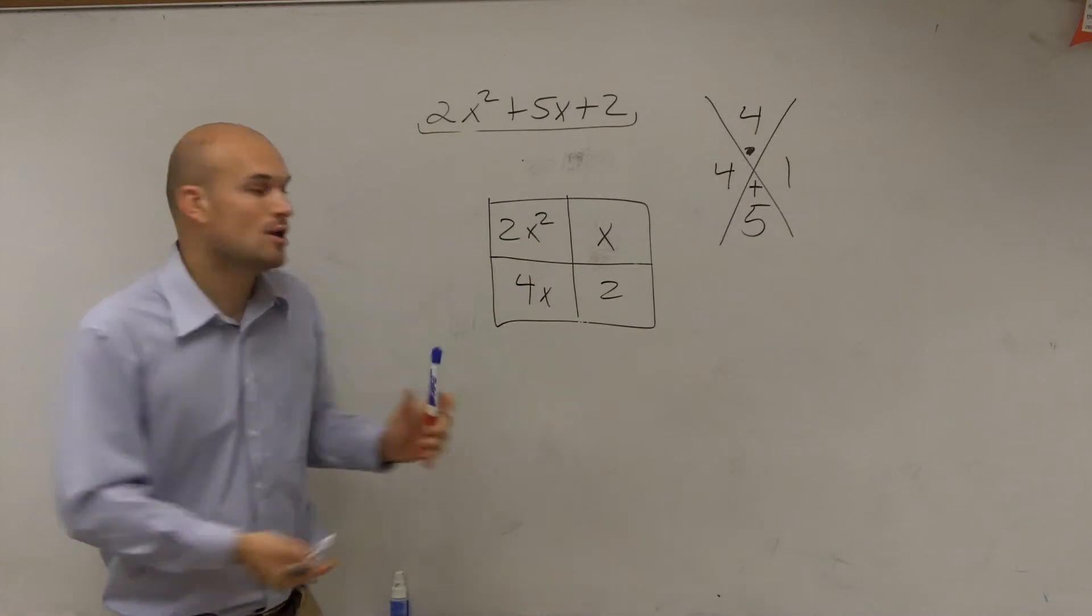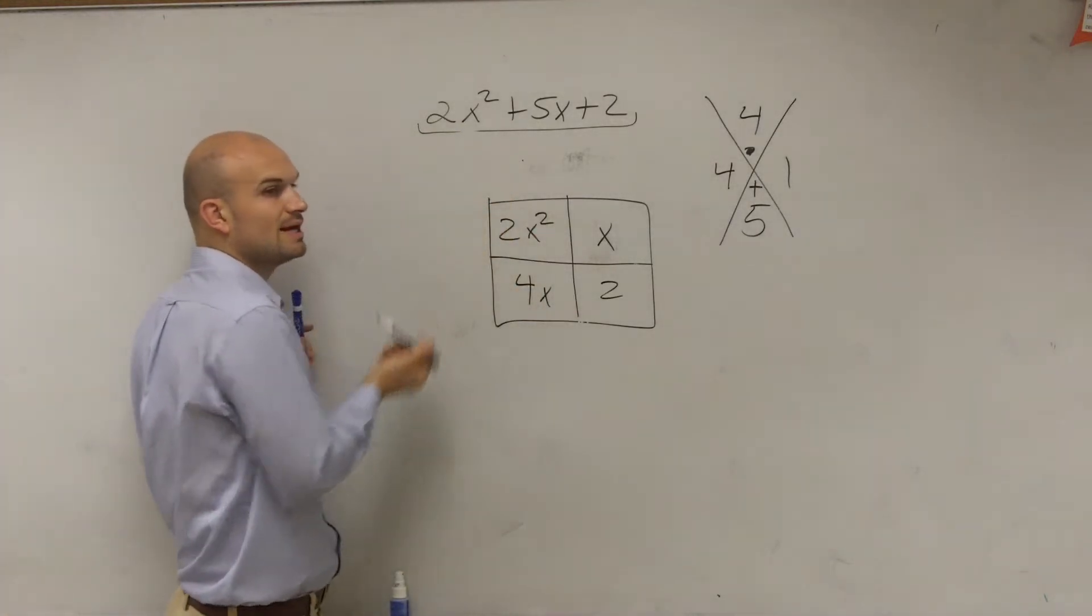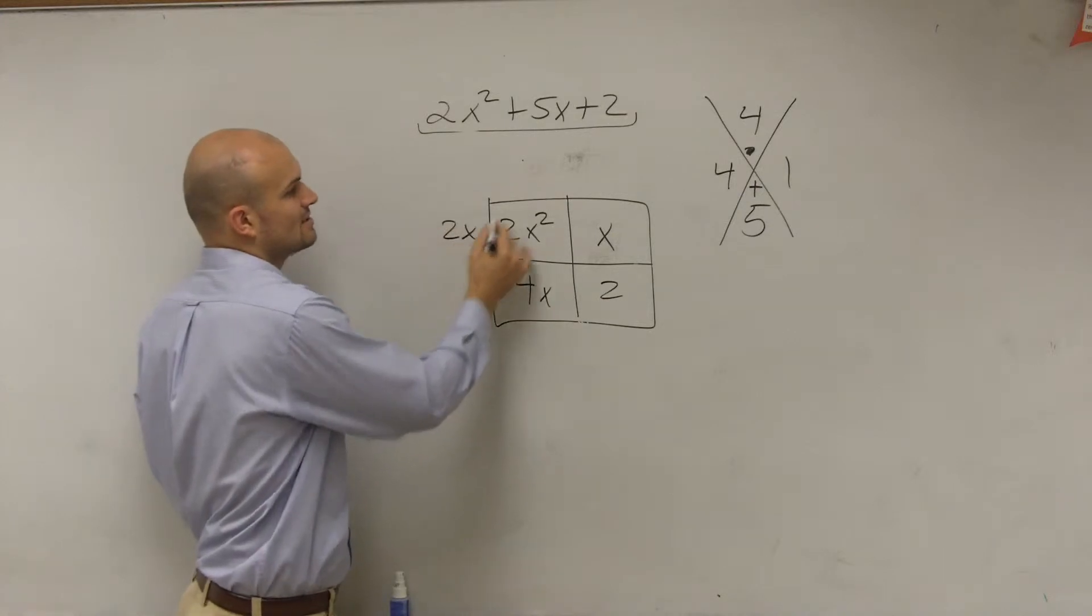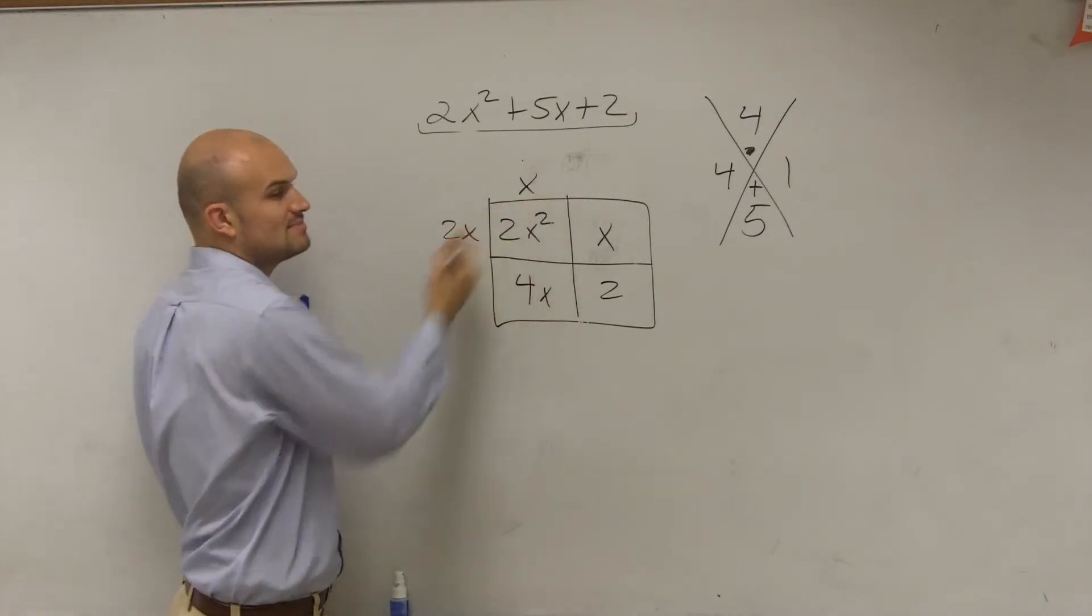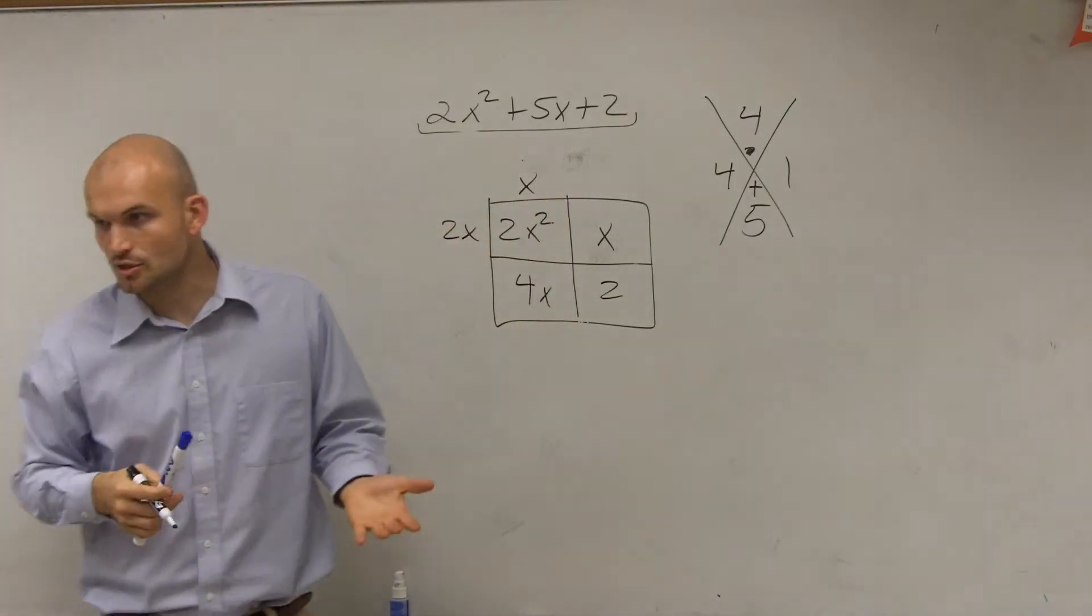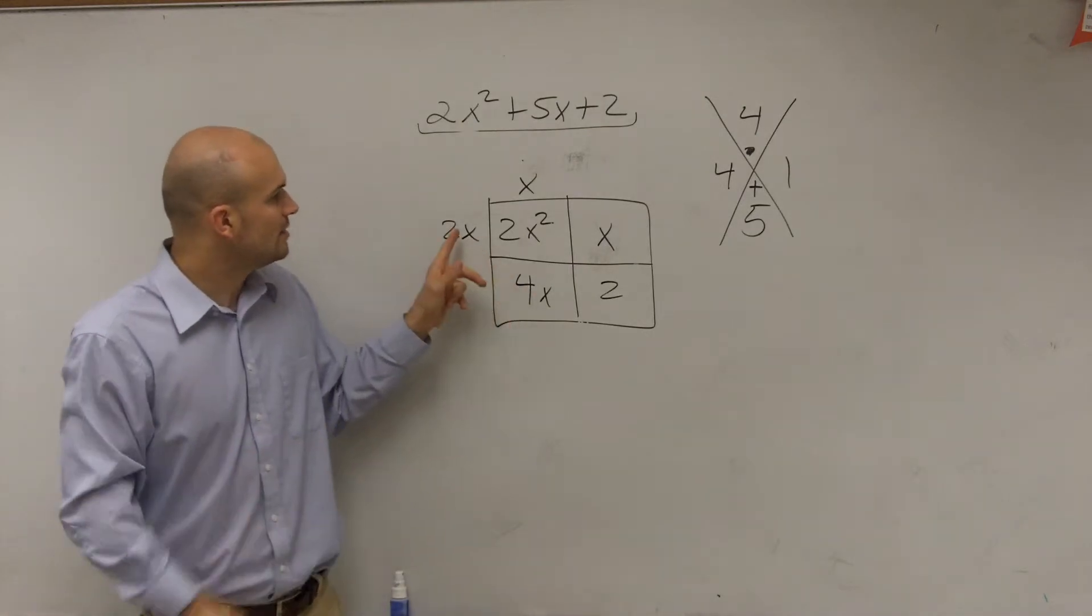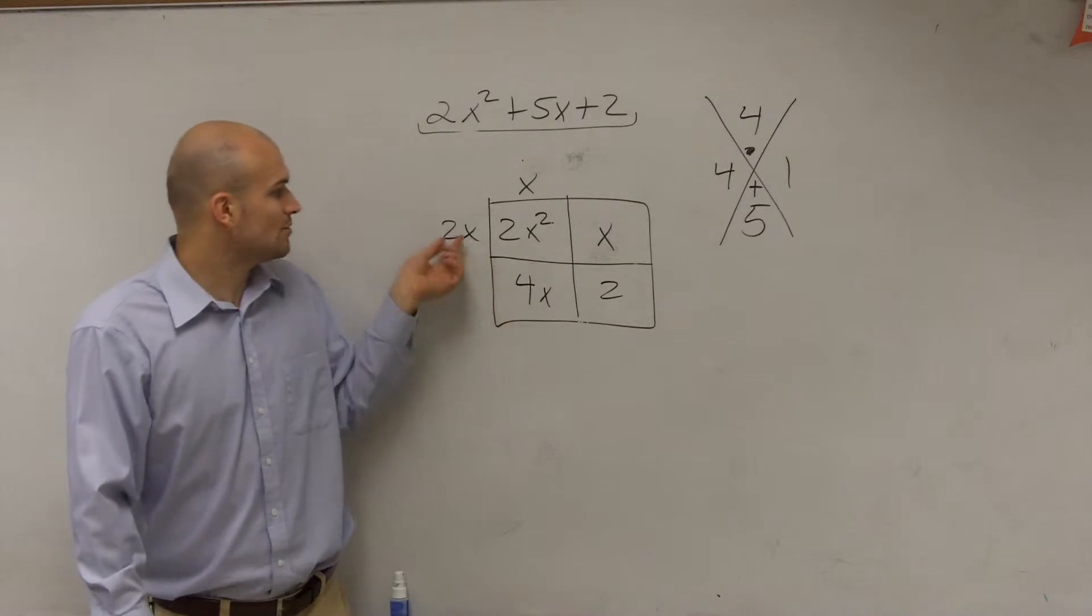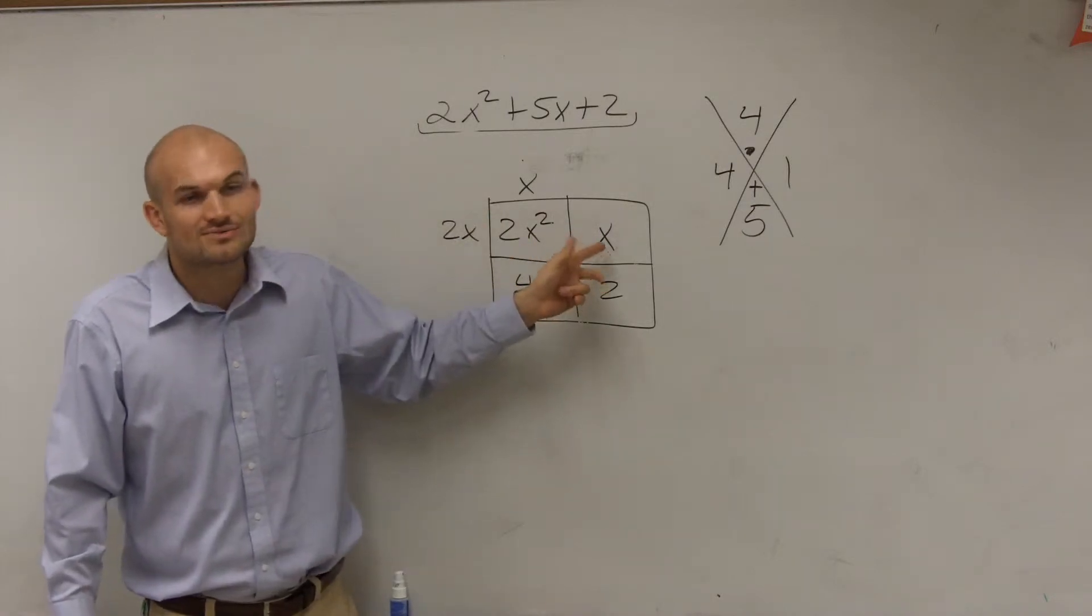Now what we do is figure out what two numbers multiply to give us 2x². So you could say 2x and x, because 2x times x equals 2x². But here's where it gets a little confusing—you always want to use integers. So 2x times 1 is going to give you x.